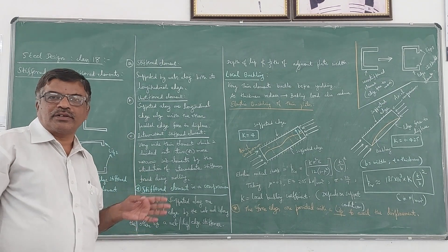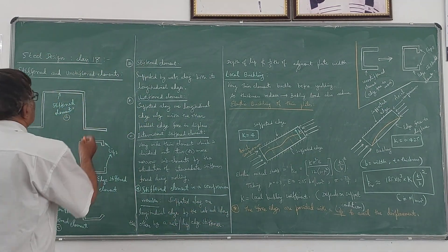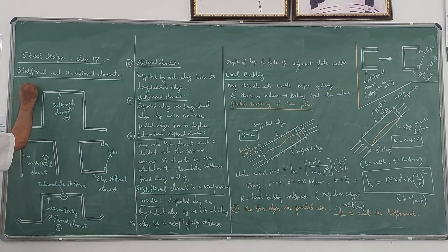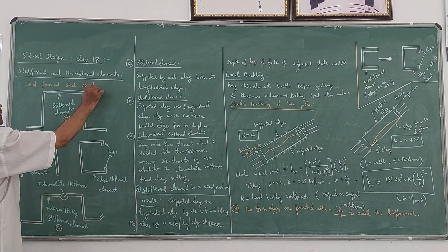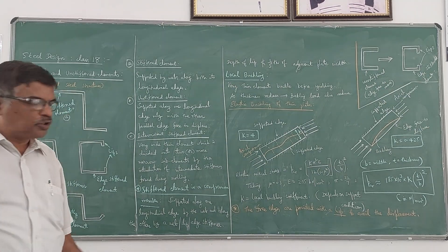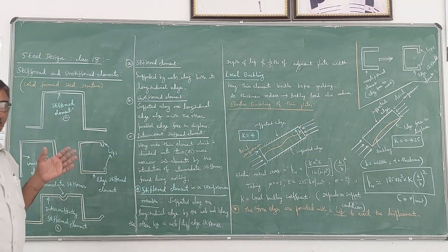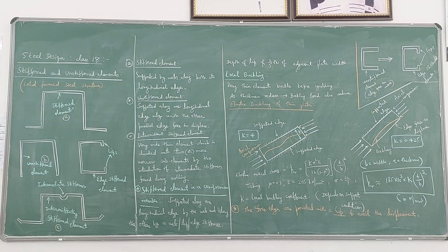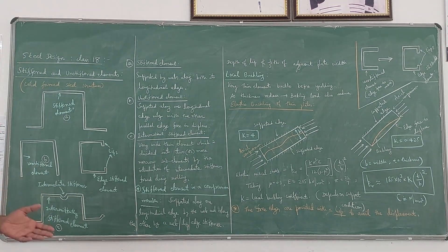In this class we will discuss stiffened and unstiffened elements in cold-formed steel sections. When you want to design any steel structure using cold-formed sections, you should know about the types of elements in the section. Normally you will have stiffened, unstiffened, and intermediate elements. Let us understand that by some examples.